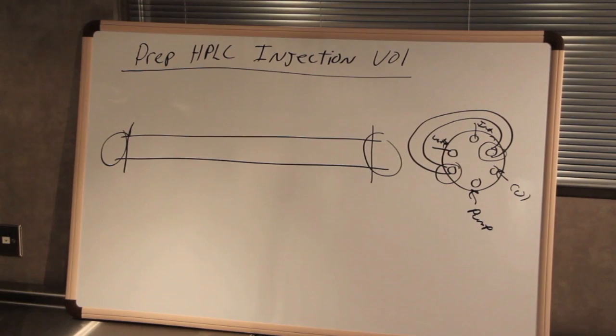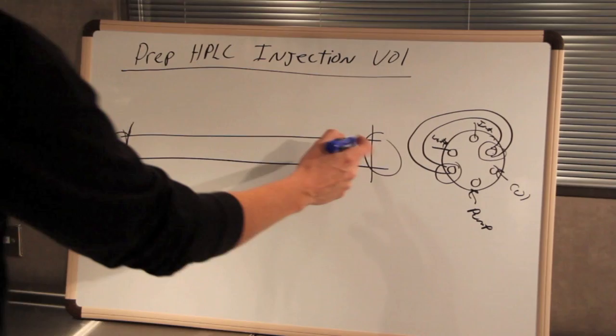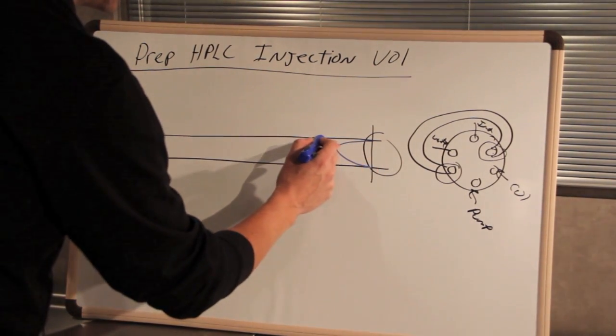Now when you load the sample onto your sample loop, it doesn't flow in a nice plug. It actually flows in a parabolic flow profile.